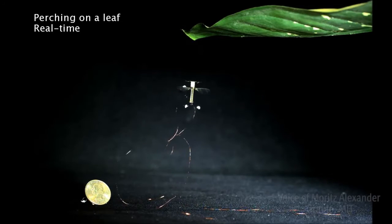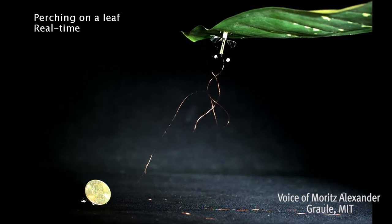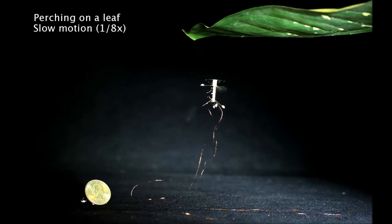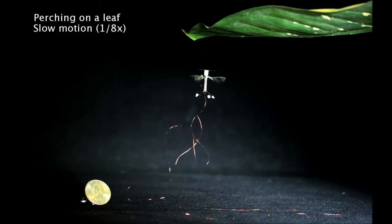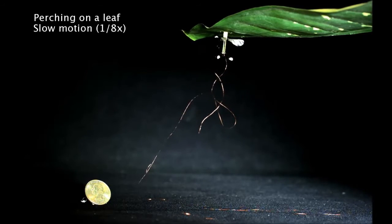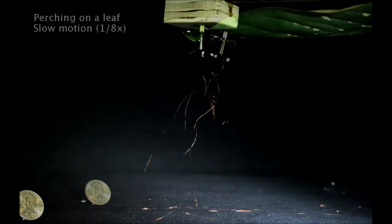When we approach a leaf, there are two things that are important. A, our electric adhesive patch needs to be aligned with the leaf. And B, we want to limit the rebound. We don't want to bounce off the leaf so we can stay close to it. Both of this is addressed with a very simple solution. We put this yellow foam mount that absorbs energy upon impact and ensures that both of these criteria are fulfilled.